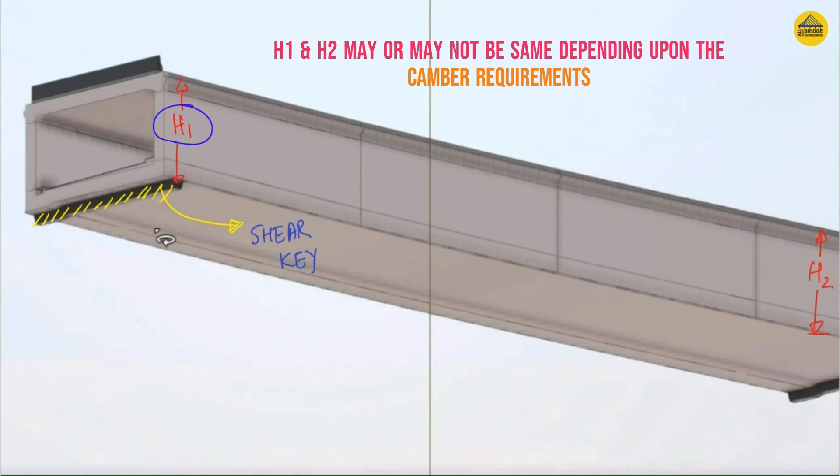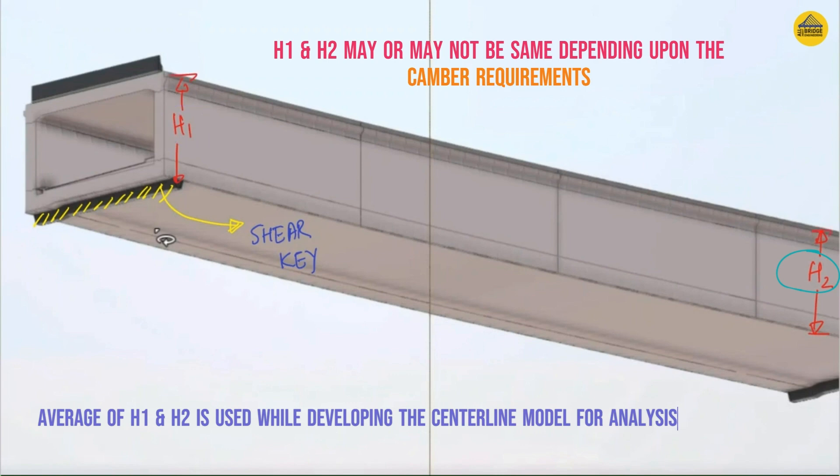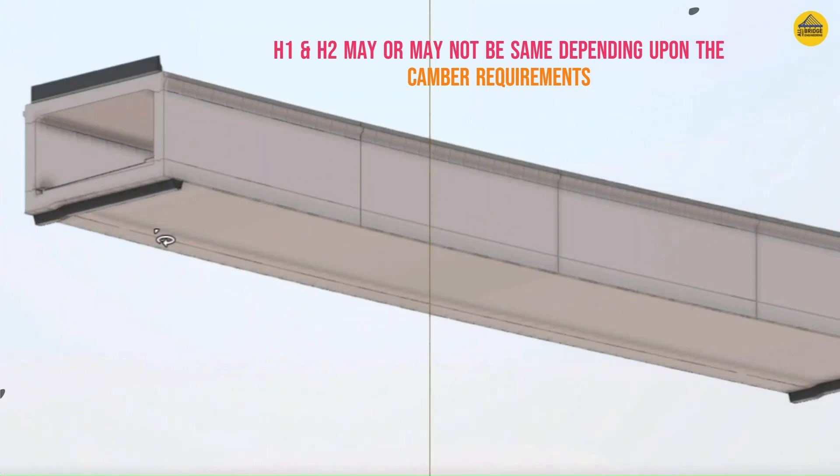You can also note that height h1 and h2 at both ends may be same or different. If they are different, then the average of these two heights is taken while analyzing the structure in any analysis software. This height is generally different if there are camber requirements.